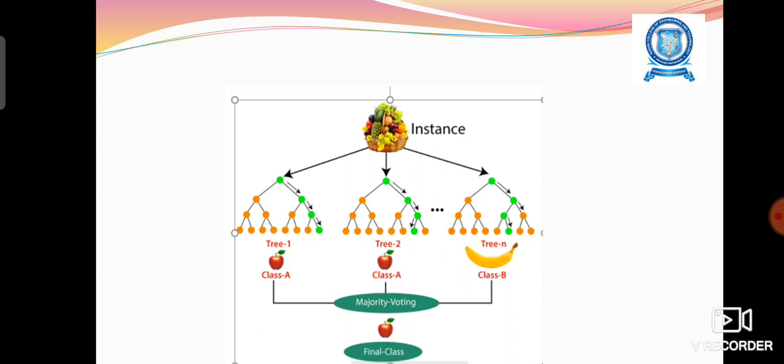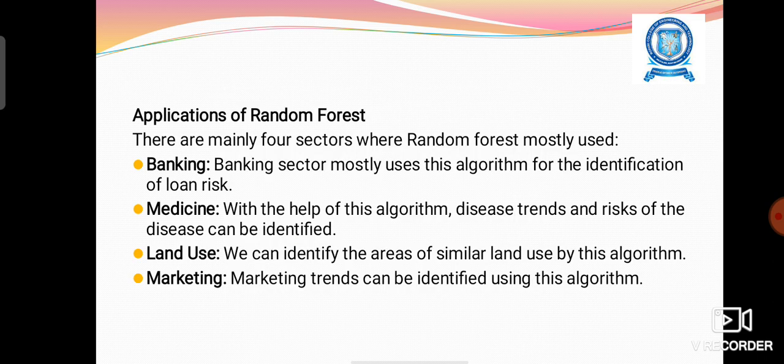Tree 1 identifies the fruit as Class A, Tree 2 also identifies it as Class A, and Tree N identifies it as Class B. The outputs of all decision trees are analyzed and majority voting is applied. Considering three decision trees, the majority prediction is that the fruit belongs to Class A, so this is taken as the final prediction.